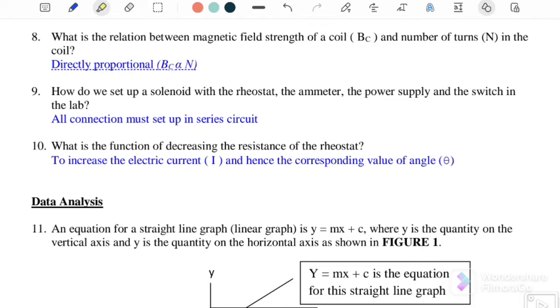What is the relation between magnetic field of the coil and the number of turns? It is directly proportional because B is directly proportional to N, where B_coil = μ₀nI/d.